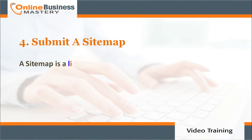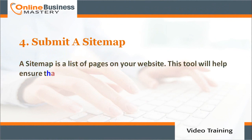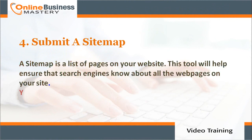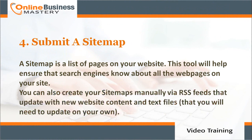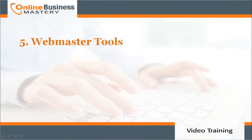Number four: submit a site map. A site map is a list of pages on your website. This tool will help ensure that search engines know about all the web pages on your site. You can also create your site map manually via RSS feeds that update with new website content, and text files that you will need to update on your own.